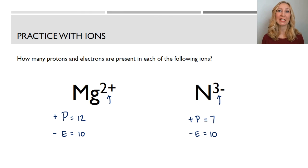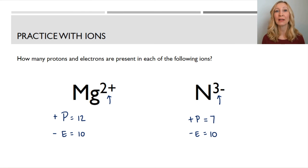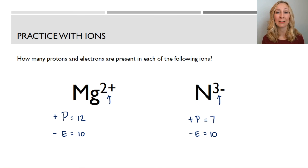You should now have a good understanding of what makes a particle an ion, and how to figure out the number of protons and electrons in a given ion.